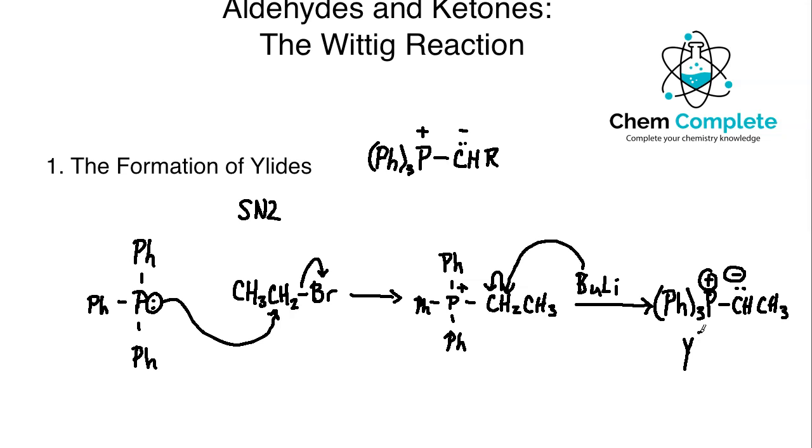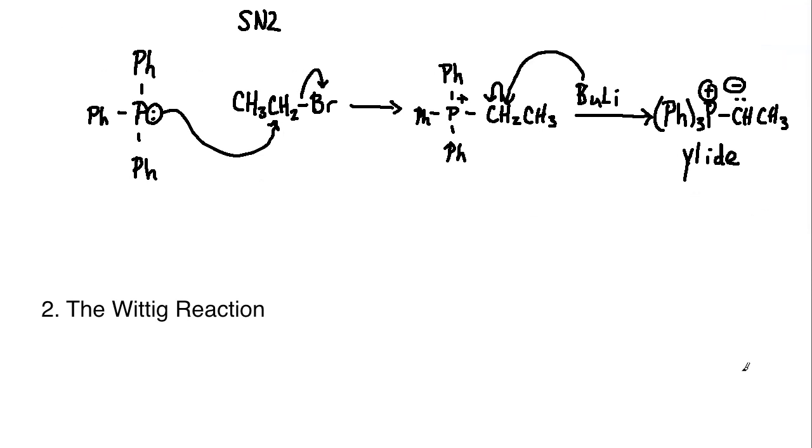So then step two, obviously, is taking our ylide and running it through the Wittig reaction itself. So the Wittig reaction is going to use an aldehyde or a ketone, and then it is going to result in an alkene, so a carbon-carbon double bond. So let's just use a simple example. We can use acetone. And so here's a ketone, and if I expose this ketone to the Wittig reagent that we just made, which would be Ph3P, and then CHCH3.